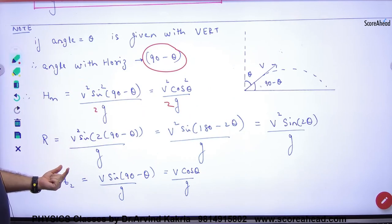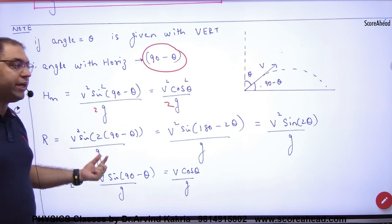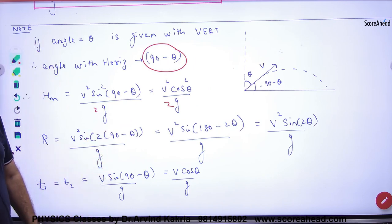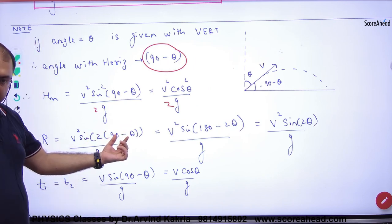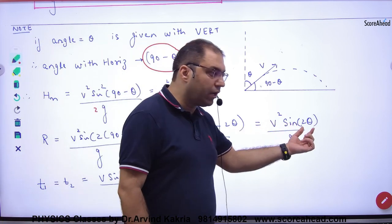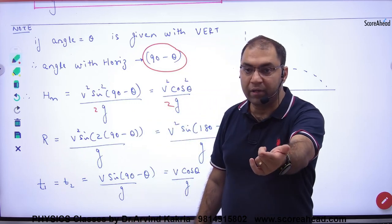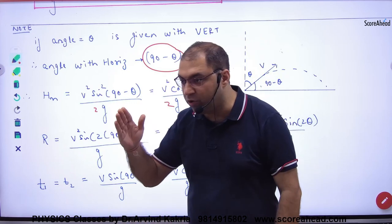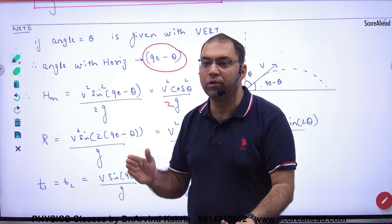Now, like the range. The range formula which we have done was V square sin 2 theta by G. But here is not theta. Here is 90 minus theta. So, sin of 180 minus 2 theta. So, the answer will be sin 2 theta. And the range remains the same. If the angle of projection is theta or 90 minus theta, then the range will remain the same.